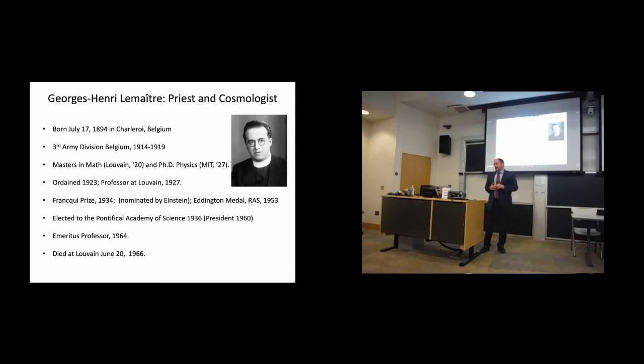So let me just briefly give you the outline of Lemaître's life and then we'll dive into it. He was born at the end of the 19th century in Charleroi, Belgium. He served honorably in the 3rd Army Division of Belgium in World War I. He then went on to get a master's in math. He went on to be ordained in 1923. He also then got a PhD in physics from MIT in 1927. He became a professor at Leuven in Belgium just after that. He won the Francqui Prize, which at the time was the second most lucrative prize after the Nobel Prize. He was nominated by Albert Einstein. He also won the Eddington Medal of the Royal Astronomical Society, which was a very distinguished medal. He was elected to the Pontifical Academy of Sciences. He became its president in 1960. He died in 1966.